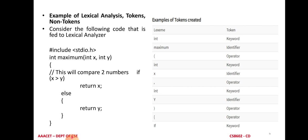Since the greater-than symbol is present between x and y, the lexemes continue accordingly. The lexeme is the original characters in the source program. The lexical analyzer then identifies the tokens: 'int' is a keyword; 'maximum' is an identifier; open bracket is an operator; 'int' is a keyword; 'x' is an identifier; comma is an operator; 'int' is a keyword; 'y' is an identifier; close bracket is an operator; open bracket is an operator; 'if' is a keyword, and so on.